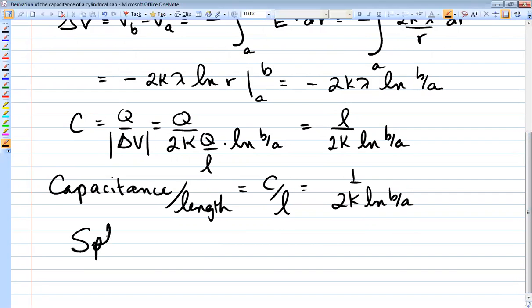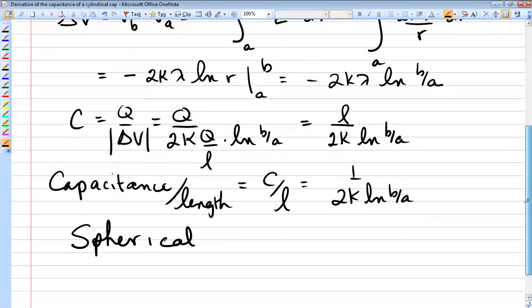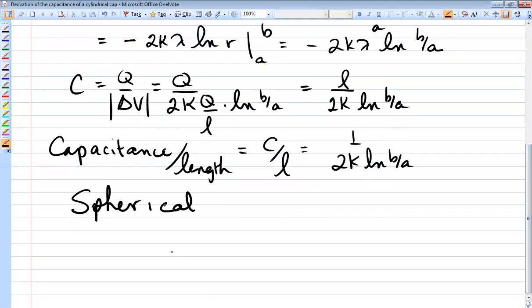The spherical one is you do exactly the same thing. You simply use the formula from Gauss's law for the electric field due to a sphere rather than a cylinder. So we have an inner sphere and an outer sphere. In the gap, there is an electric field. We'll call the inner surface B, the outer surface A. And you do exactly the same thing.